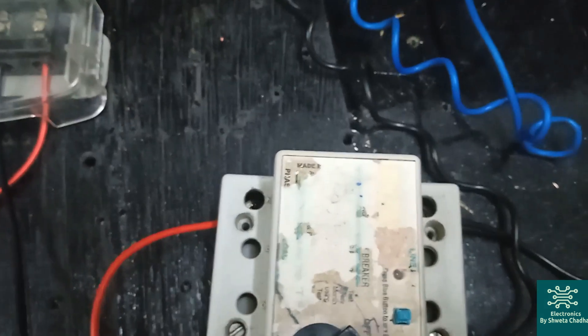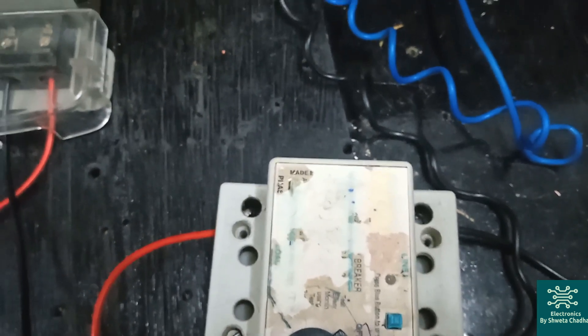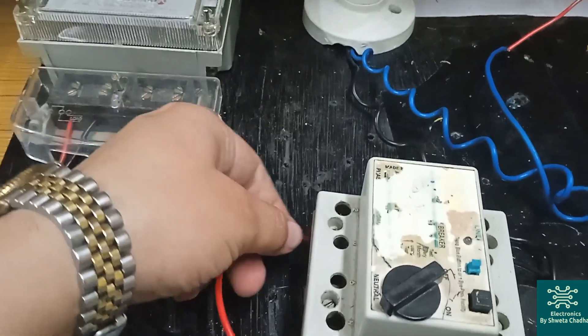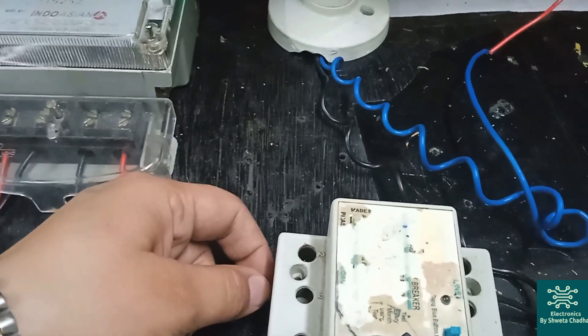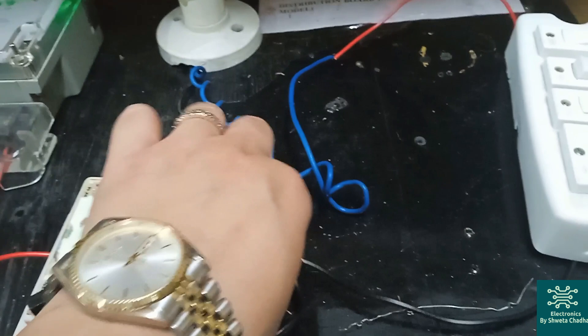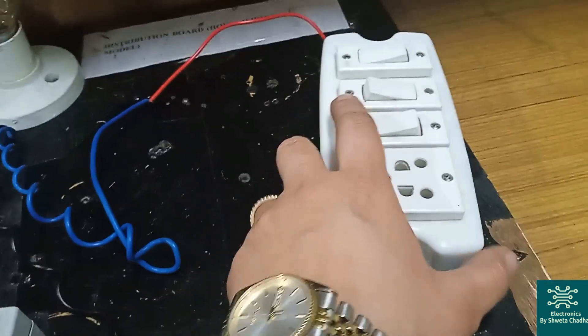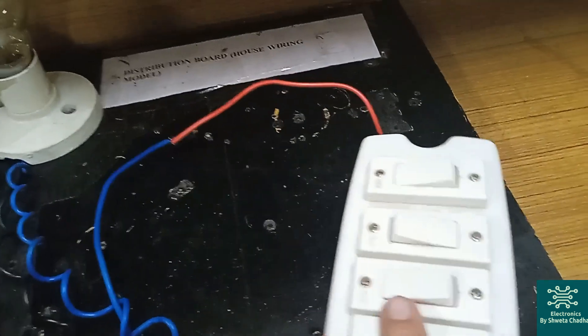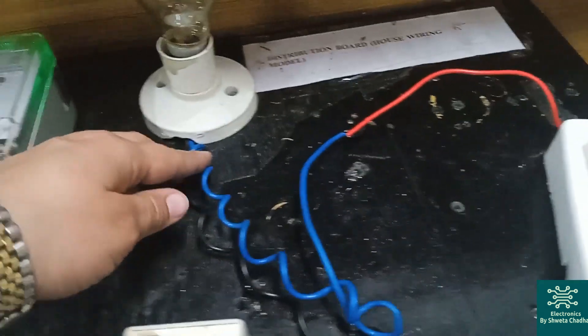That means the above two terminals will be directly connected with phase wire. That means this wire coming from MCB will be connected with ELCB. The output of ELCB, this wire, is now connected with switch. After switch, it is going to be connected with our bulb.